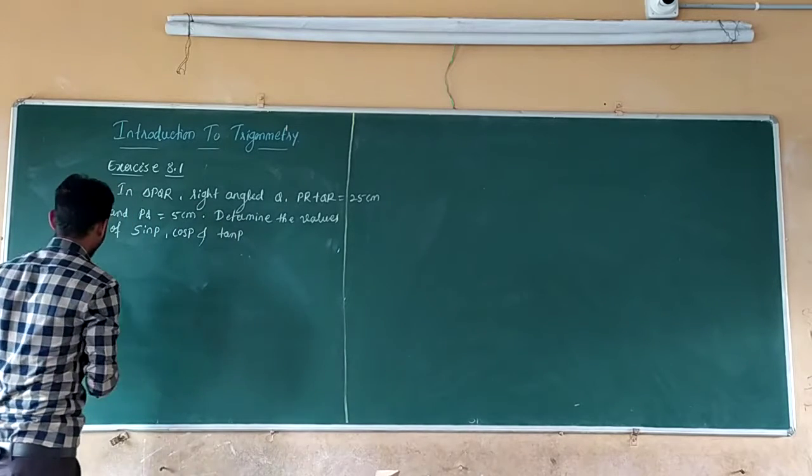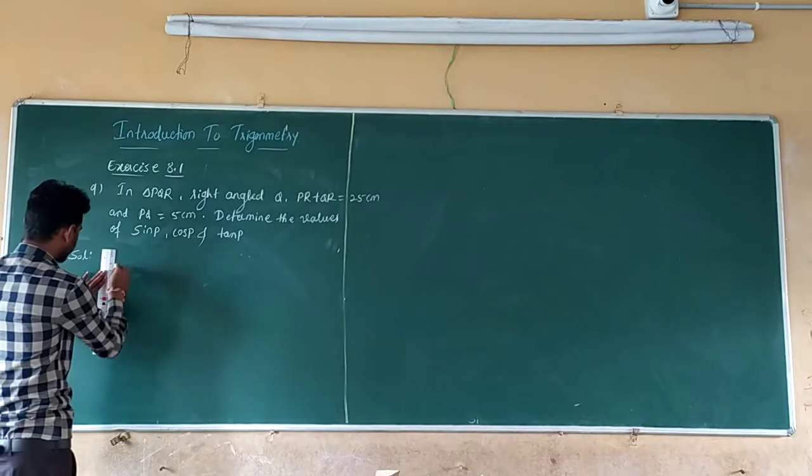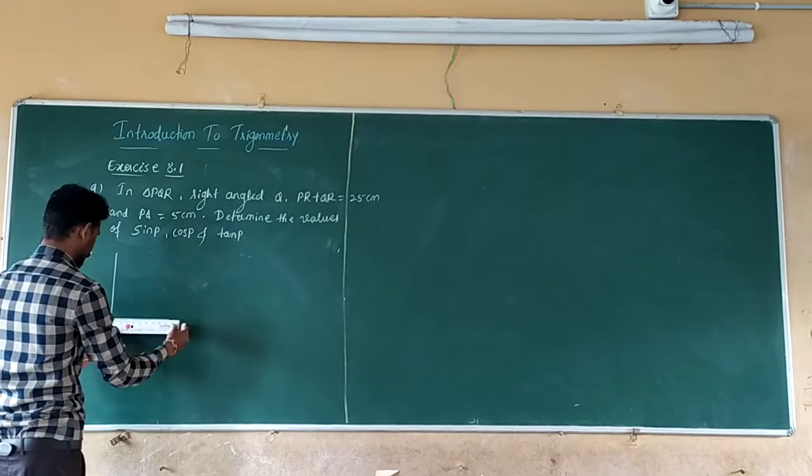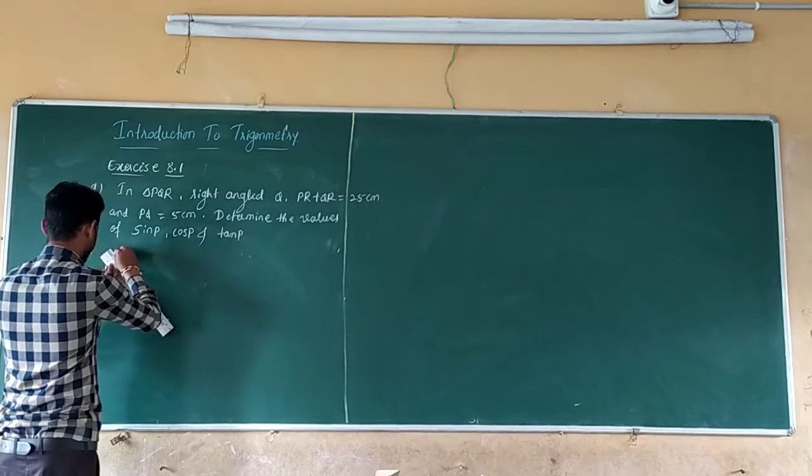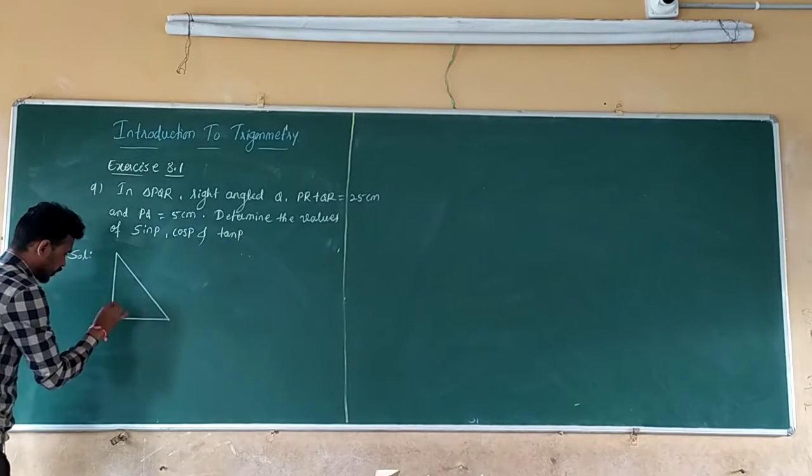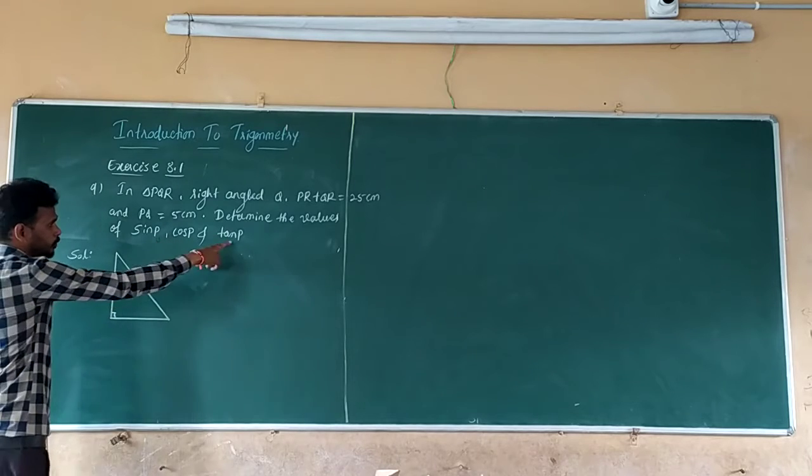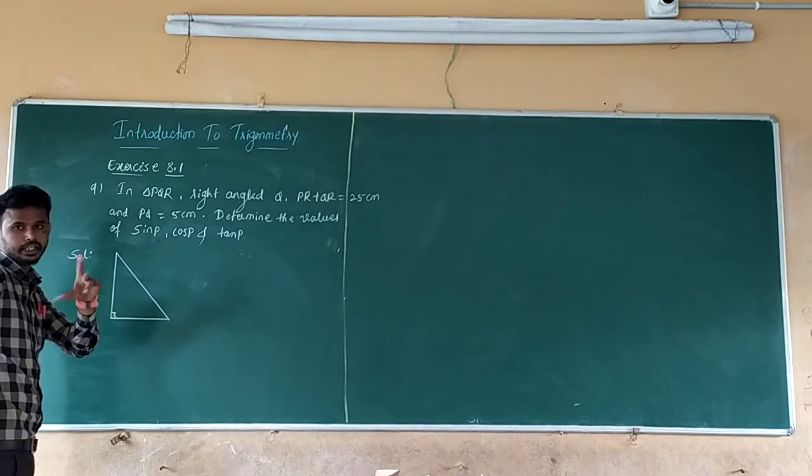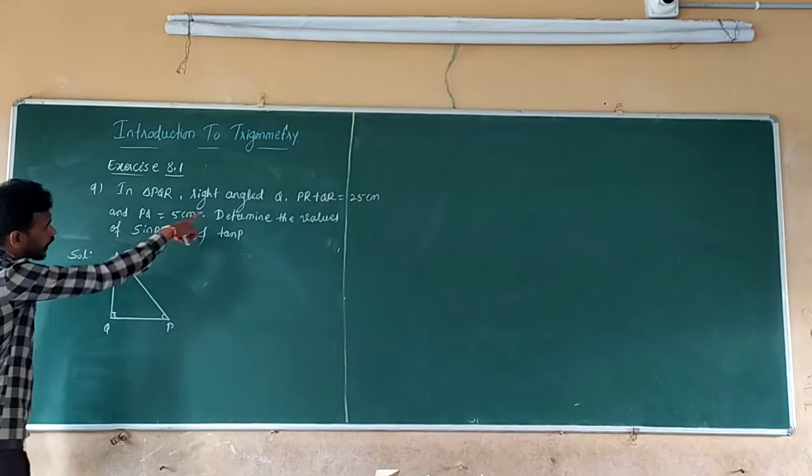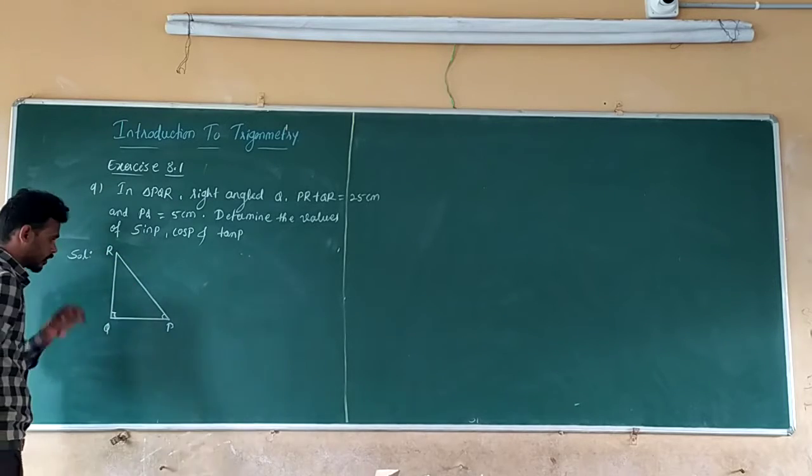Let us draw it. Right triangle. Here we need to find P. Since sine P is mentioned, that means angle P is at one angle. Let us take this one as P and the right angle at Q.